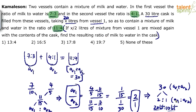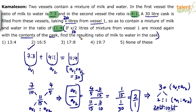Now for the second part: if x/2 liters of mixture from vessel 1 are mixed again with the contents of the cask — since x is 20, x/2 is 10 liters. We take 10 liters more from vessel 1 (ratio 7:3) and mix it with the contents of the cask, which currently holds 30 liters of milk and water in the ratio 11:4.